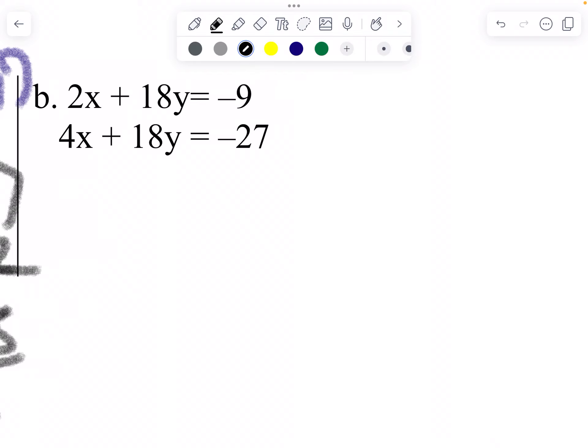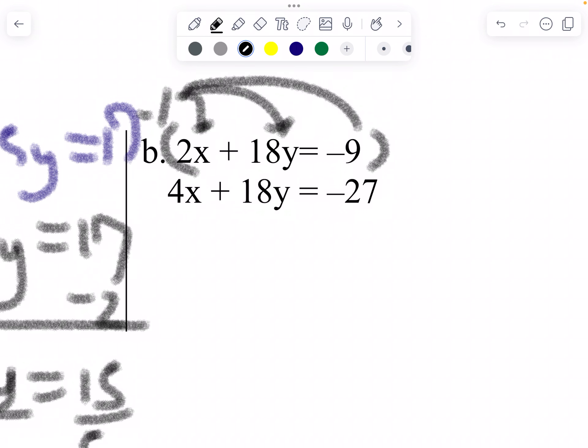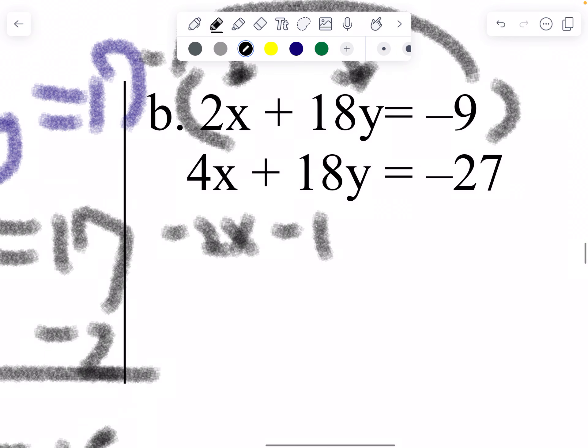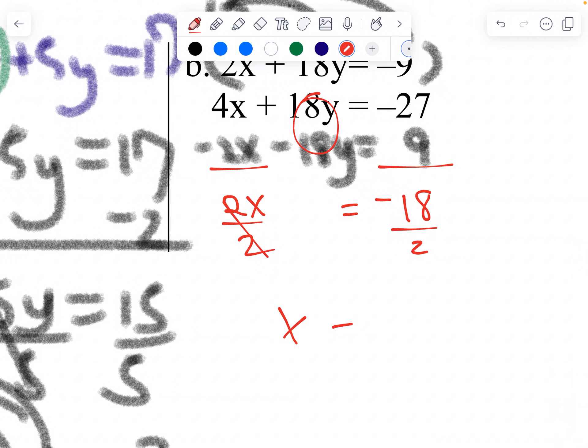So let's go ahead and multiply this top one by negative 1. Distribute negative 1 to all of them. Get negative 2x minus 18y equals to positive 9. See, this is better. Okay. That's 2x. I like this one better. That's 0. We eliminate it. That's negative 18. Divide by 2. x equals to negative 9.